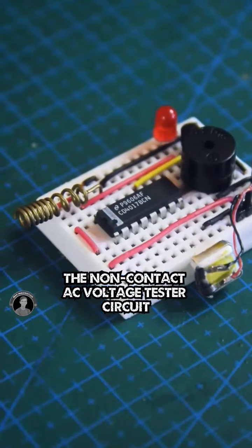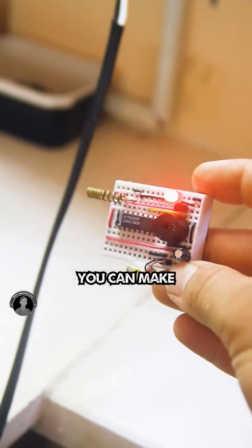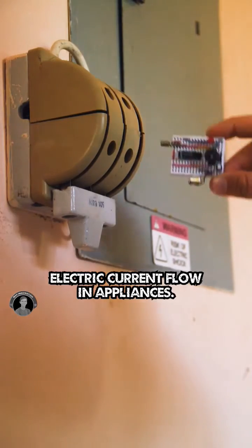The non-contact AC voltage tester circuit, a simple but effective circuit you can make to detect the presence of electric current flow in appliances.